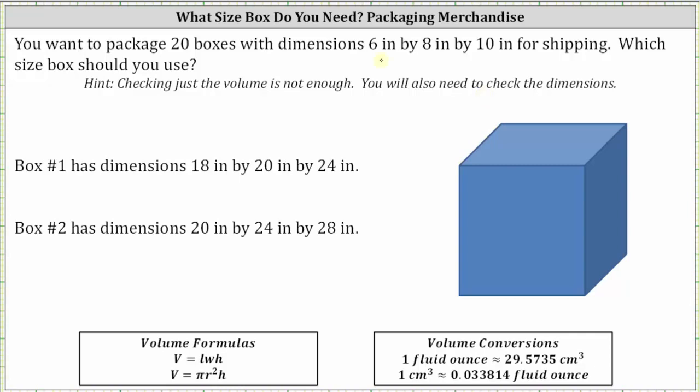Let's begin by determining the volume of the 20 boxes. The volume of a box is equal to length times width times height, and therefore V_b, the volume of the 20 boxes, is equal to 20 times the volume of one small box, which is 6 inches times 8 inches times 10 inches. Because the units are in inches, the volume is in cubic inches. This product is equal to 9,600, giving us 9,600 cubic inches.